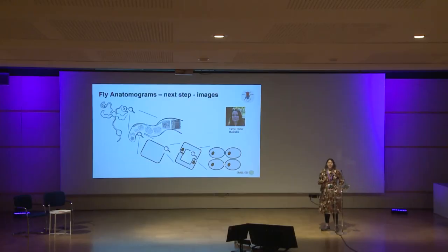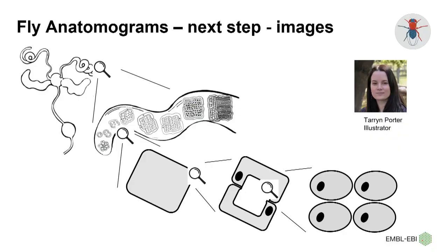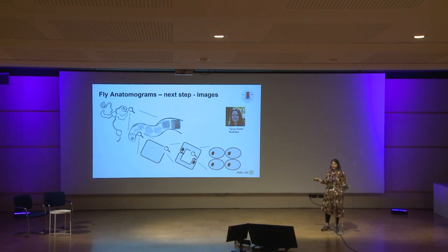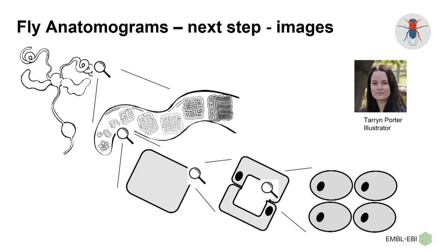The next step is that if you want an interactive image, you need someone to make that image. I became a scientist because I am rubbish at art, so what we do is find a really talented artist — Taryn Porter, a scientific illustrator who works at the Sanger. We asked her to make beautiful images for each organism part, and she did that for us. We have some really nice images for the testes: a top-level image and a zoom-in at the single cell level, and for every shape within that image we develop a corresponding shape.